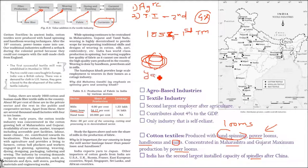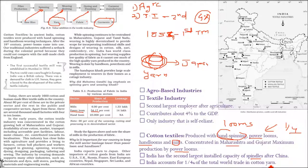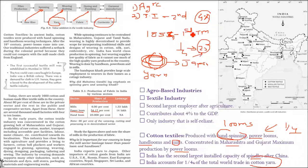India exports yarn to Japan, USA, UK, Russia, France, East European countries, Nepal, Singapore, Sri Lanka, and various African countries. India accounts for one-fourth (25%) of total world trade in cotton yarn. However, India is very good at yarn but not as competitive in textiles. Bangladesh, a smaller neighboring country, is ahead of India in textiles. The value difference is significant — yarn sells at 85 rupees per kg while fabric or garments sell at 800 rupees per kg.